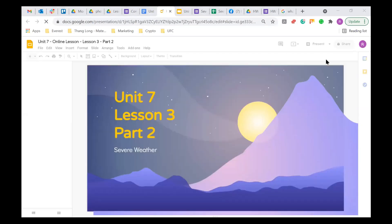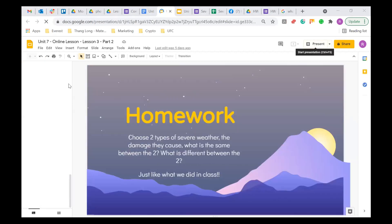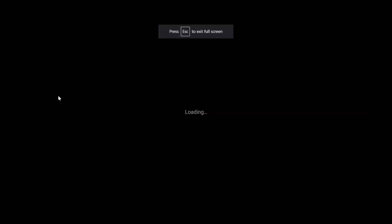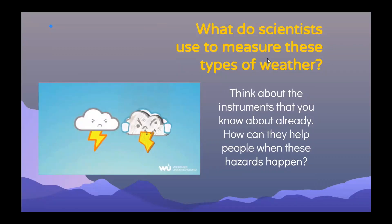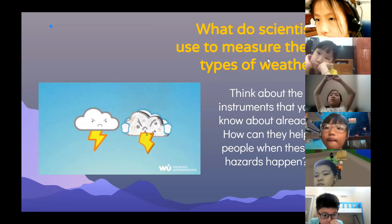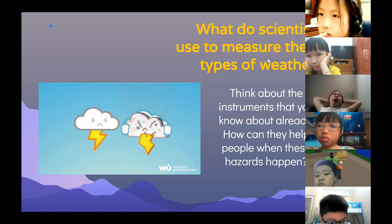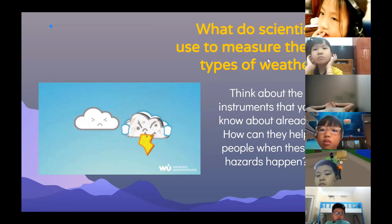Hazards and severe weather can be very very dangerous to people. My question now is: what do we do? How do we stop ourselves from getting hurt? How do we make sure that this dangerous weather doesn't affect us too much? If you know there is a tornado coming, what information do you need to know about it to help you stay safe?